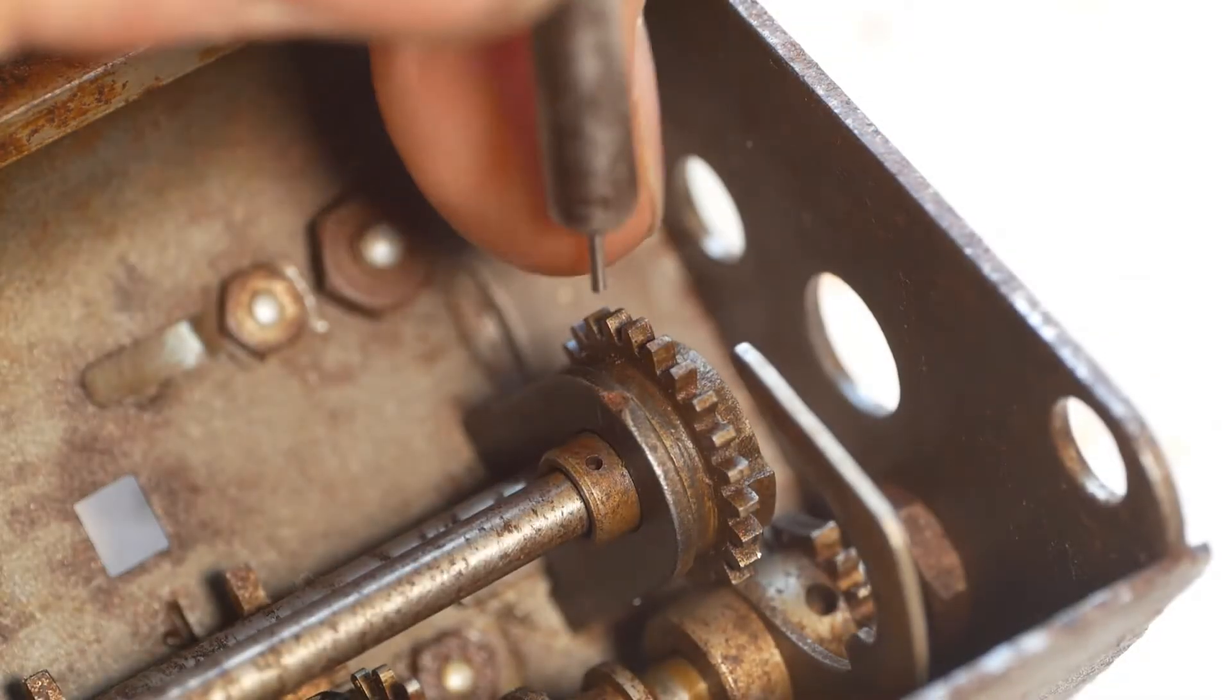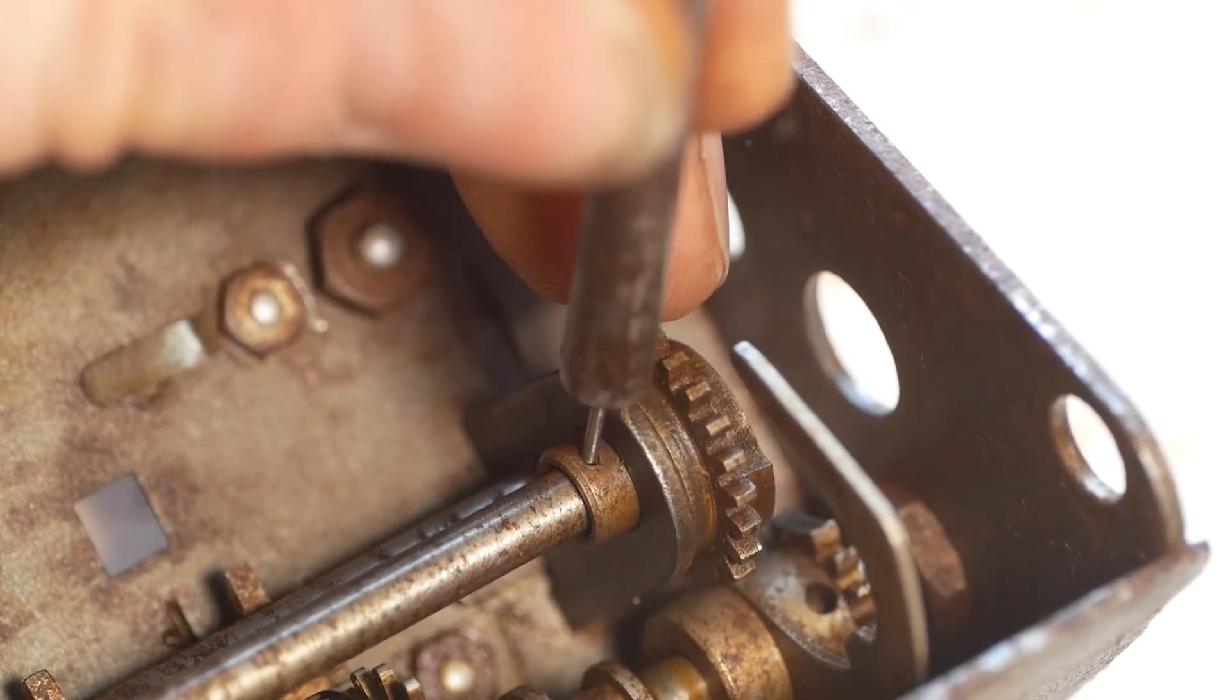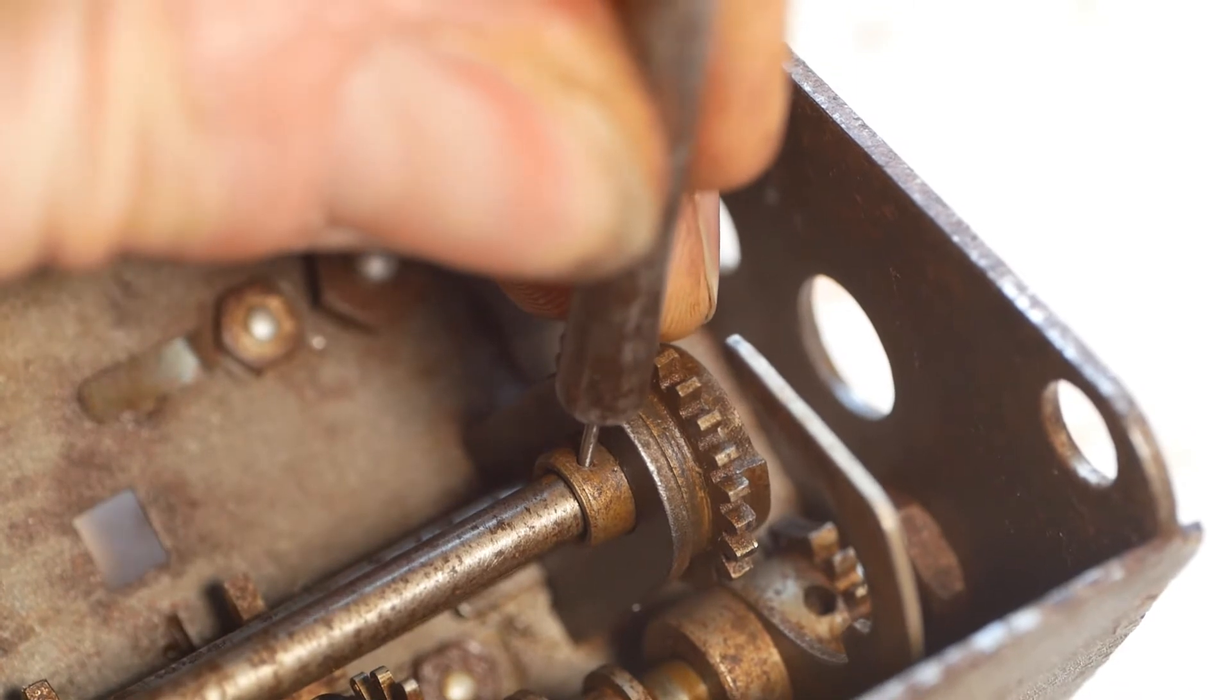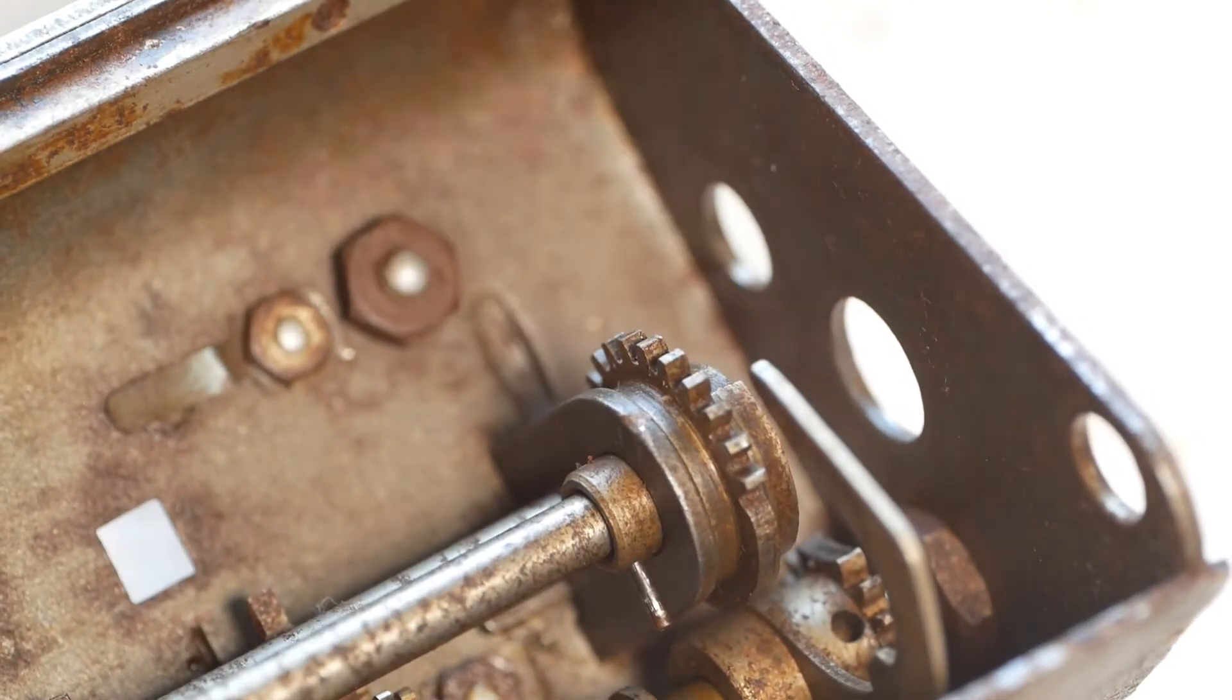I forgot to mention earlier, I've already had this carriage to pieces off camera, and then once I knew how everything came apart, I reassembled it ready to film the disassembly, so that might explain why some of the parts appear to be coming apart a bit easier than you might expect.